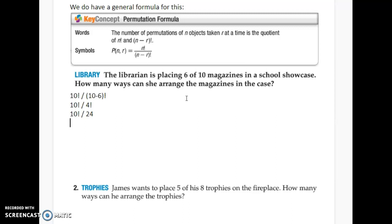And when I hit equal, I get a pretty big number. I'm getting 3,628,800. Now, you don't actually have to write that number down or clear or anything. When I hit enter and I get that number, I'm just going to go ahead and hit divide 24. And the answer is 151,200 ways to arrange the magazines.